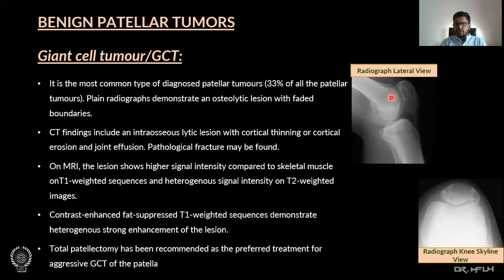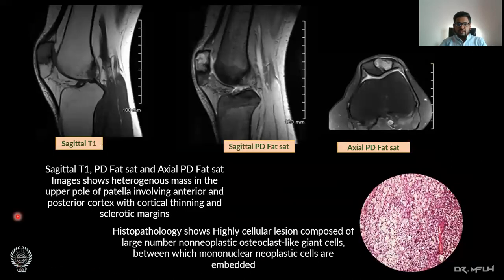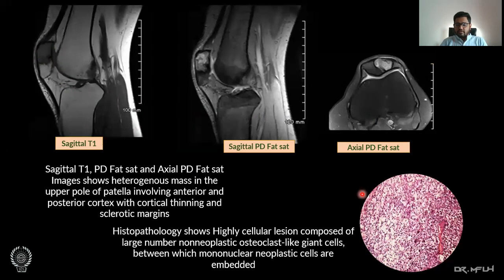Here we can see a lateral knee radiograph showing an osteolytic lesion, with similar findings seen on the knee skyline view. On sagittal T1-weighted sequence, sagittal proton density fat-sat, and axial proton density fat-sat sequences, we can see a heterogeneous mass in the upper pole of the patella involving the anterior and posterior cortex with cortical thinning. Histopathology shows tumour-like Giant Cells, which is characteristic of Giant Cell Tumour.